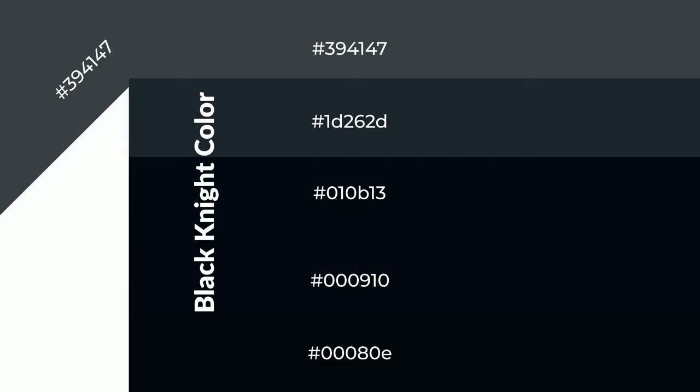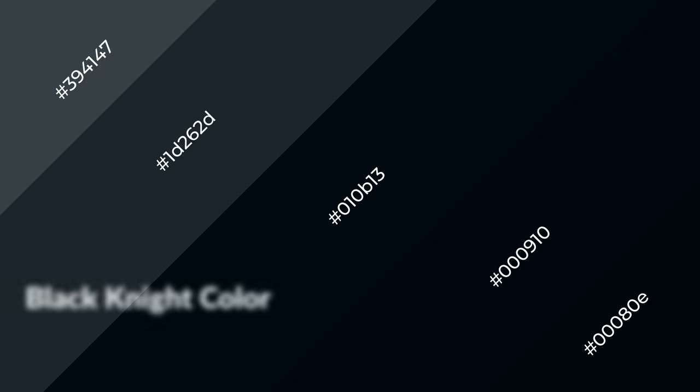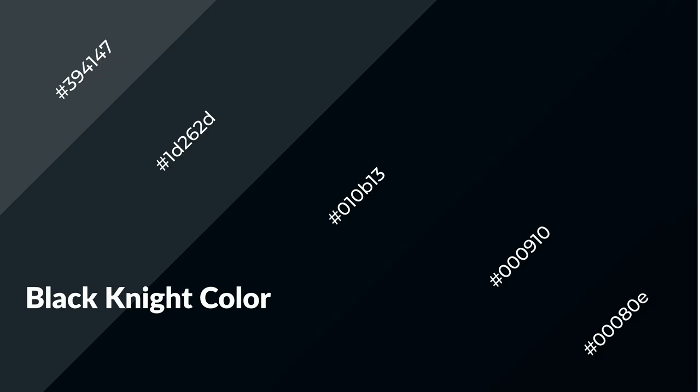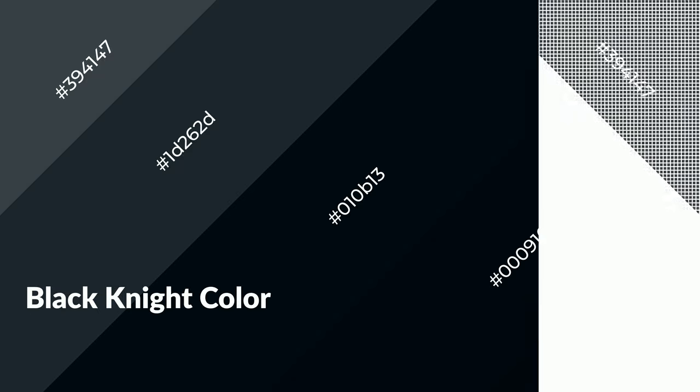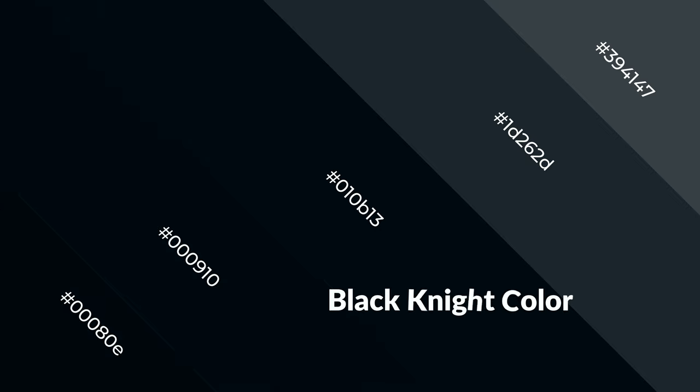To generate shades of a color, we add black to the color. Shades are used in patterns, 3D effects, and layers. Shades create depth and drama. Black night is a cool color and it emits calming, serene, soothing, refreshing, spacious, unwinding, peaceful, and relaxed emotions.